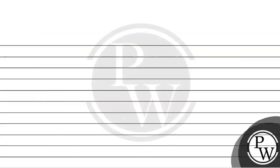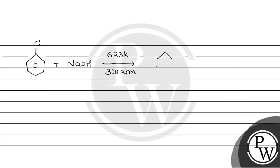We will use this concept here. We have chlorobenzene, and we react it with NaOH in the presence of 623 Kelvin temperature and very high pressure of 300 atm. So here we get sodium phenoxide — O⁻ Na⁺.